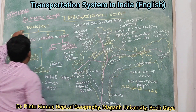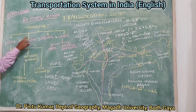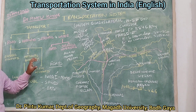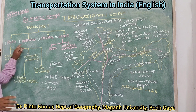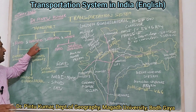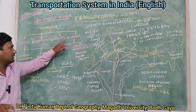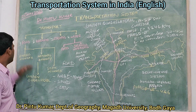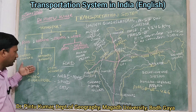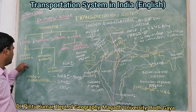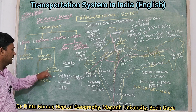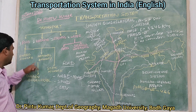As we go into the transportation system, it has to be categorized. My lecture will be focused on these types of points: firstly, road networks; second, railway networks; then airways and waterways. For road networks, I am going to deliver a lecture covering expressways, national highways, and state highways.